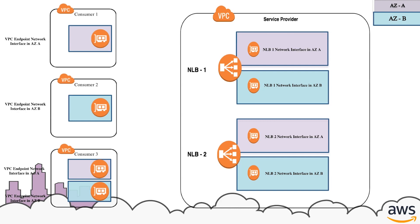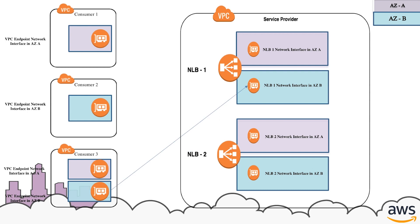When Consumer 1 connects to the service using its endpoint interface in AZ-A, it connects to either NLB1's or NLB2's elastic network interface in AZ-A. When Consumer 2 connects to the service using its endpoint interface in AZ-B, it connects to either NLB1's or NLB2's elastic network interface in AZ-B. Depending upon the AZ from where the connection is initiated for Consumer 3, it can connect to either NLB1 or NLB2 in AZ-A or AZ-B. For example, if the connection is initiated from an endpoint interface in AZ-A, it can connect to the elastic network interface of NLB1 or NLB2 in AZ-A. Similarly, an endpoint interface in AZ-B can connect to the elastic network interface of either of the NLBs in AZ-B.